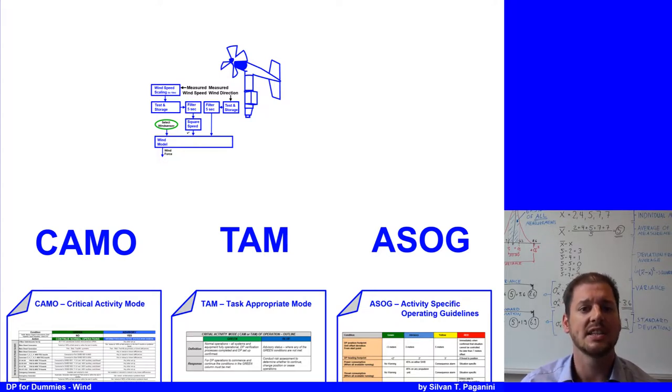The critical activity mode, in short CAMO, shows how to configure the vessel DP system including power generation and distribution, propulsion, and position reference system.